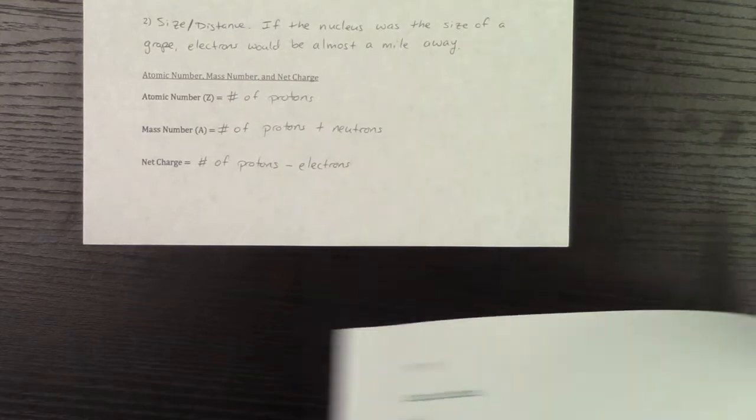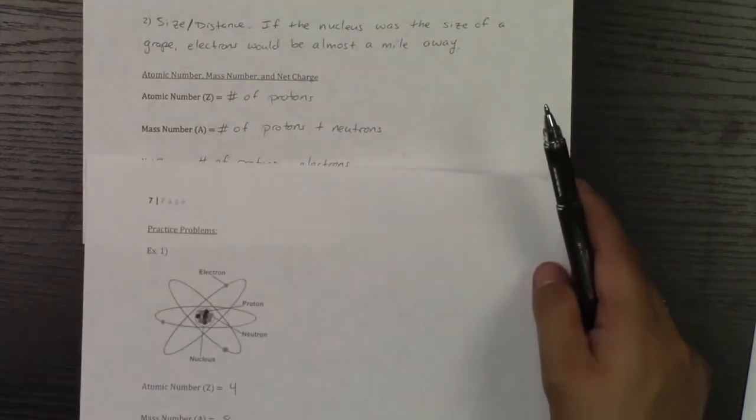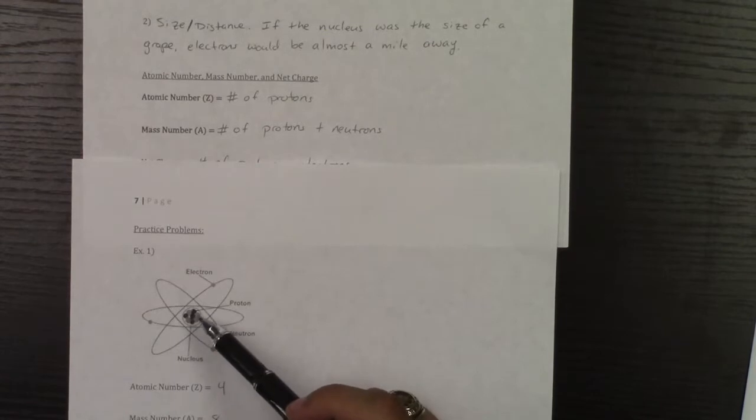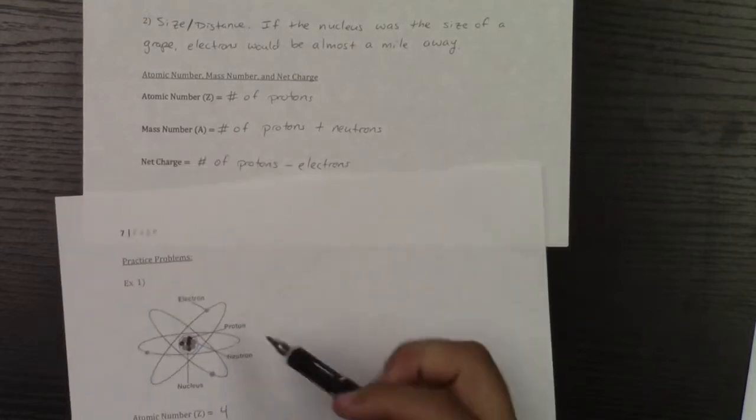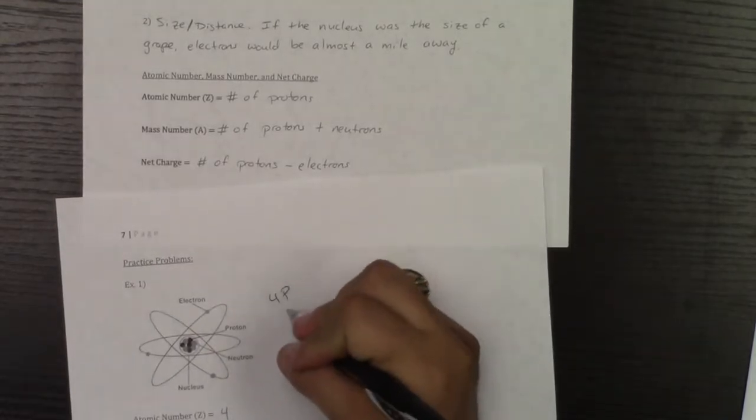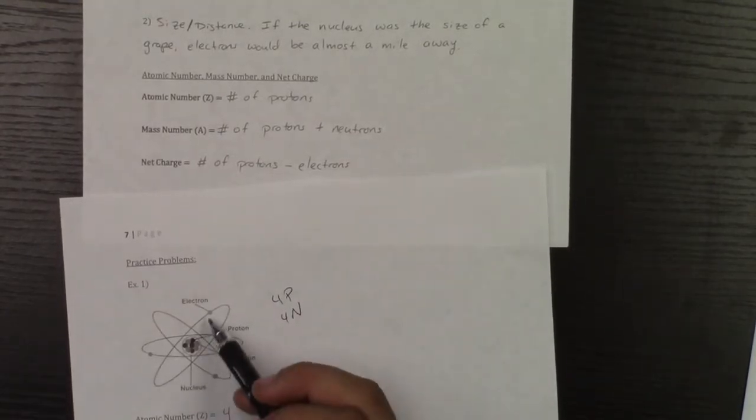Take a look at this first picture. This first picture right here is going to have one, two, three, four protons. And it's going to have one, two, three, four neutrons. So this is going to have four protons and four neutrons, in case you can't see that picture.